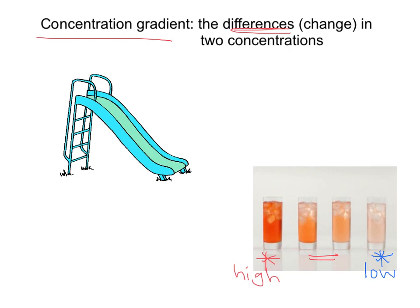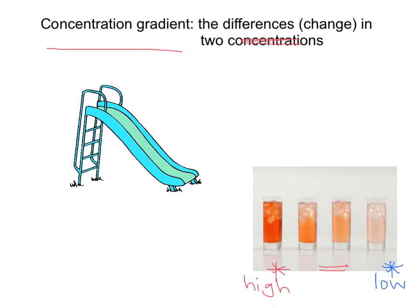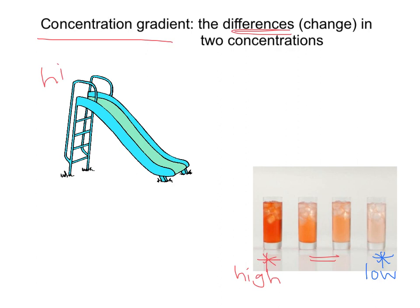As we look at this concentration gradient, let's go to this picture of a slide. A concentration gradient is very similar to a slide. There would be a high concentration at the top of the slide and a low concentration at the bottom. We're going to talk about something called diffusion, and I want you to keep this picture of a slide in mind. Molecules are going to go from a high concentration — where there's a lot of them — to a low concentration. They're going to go down the concentration gradient, down the slide from high to low.